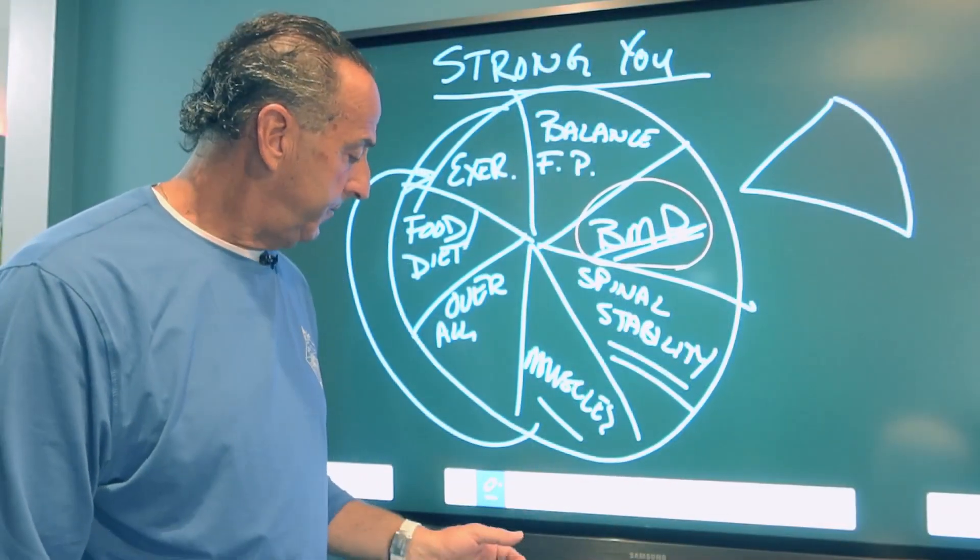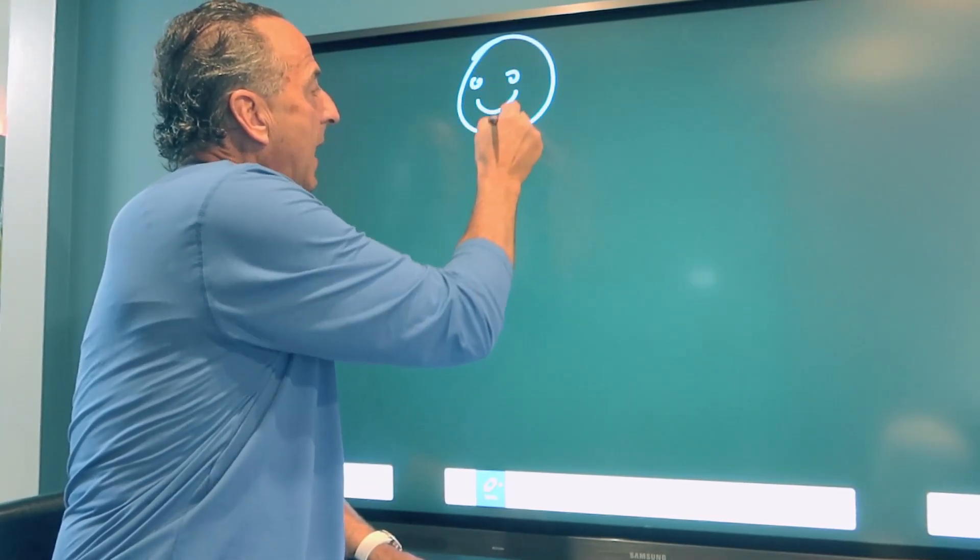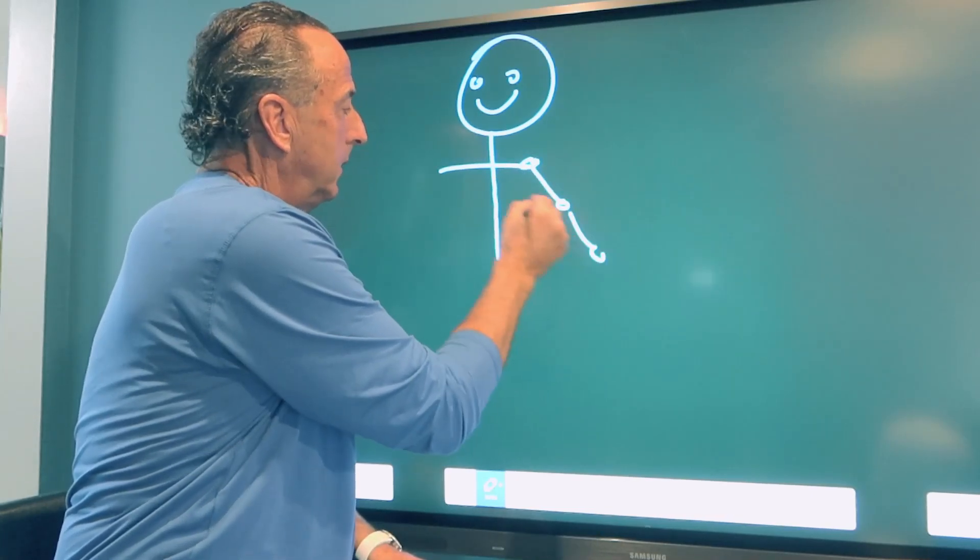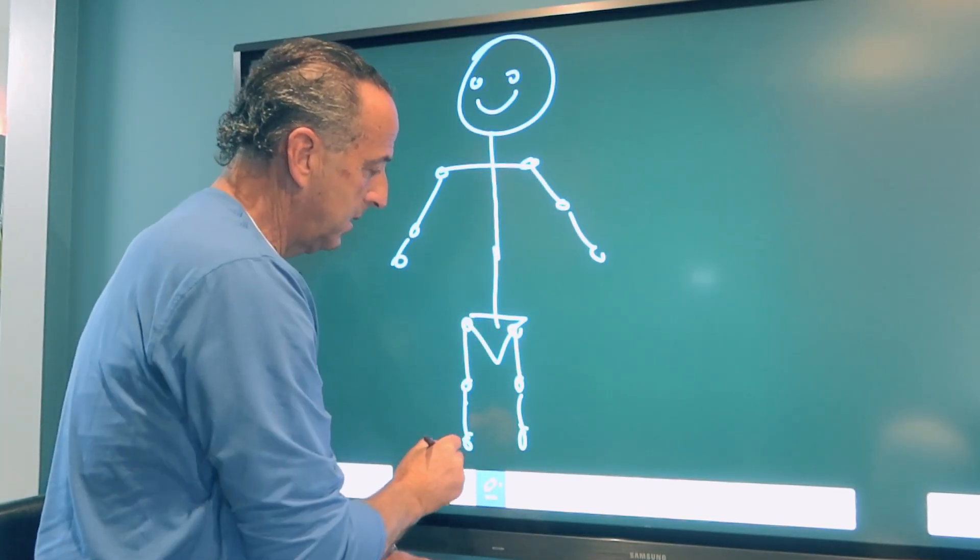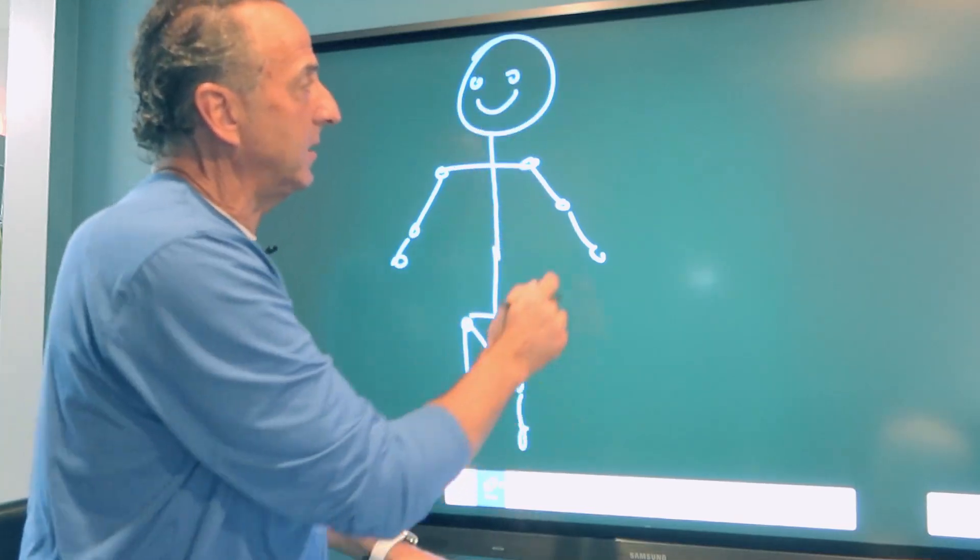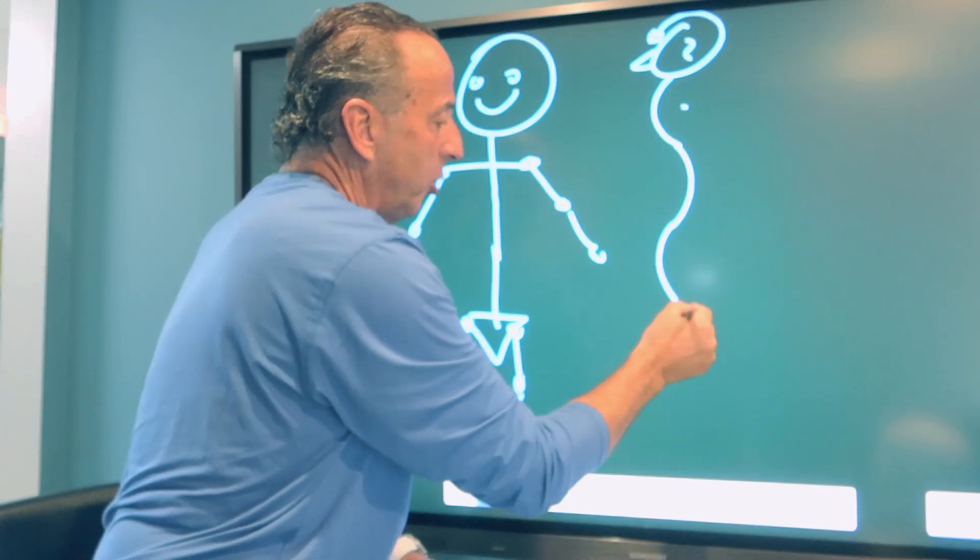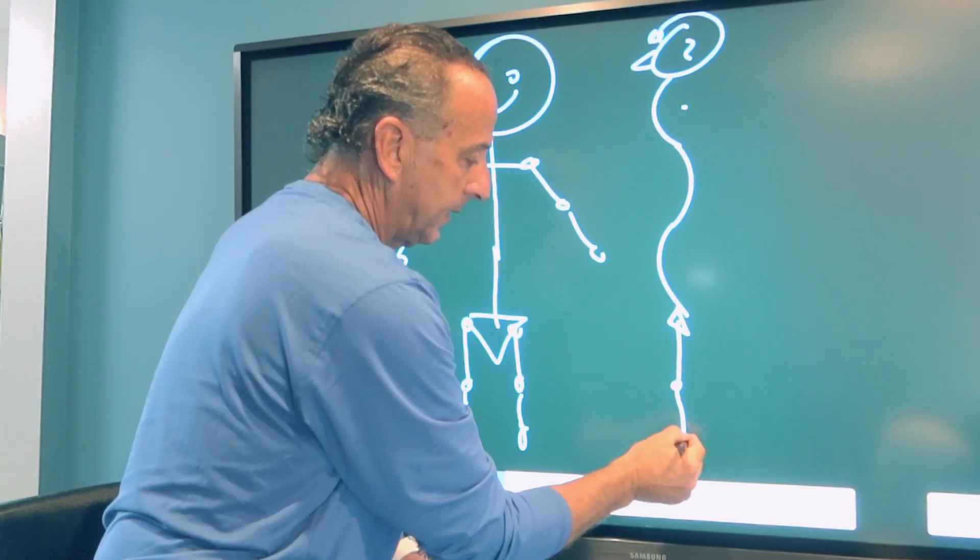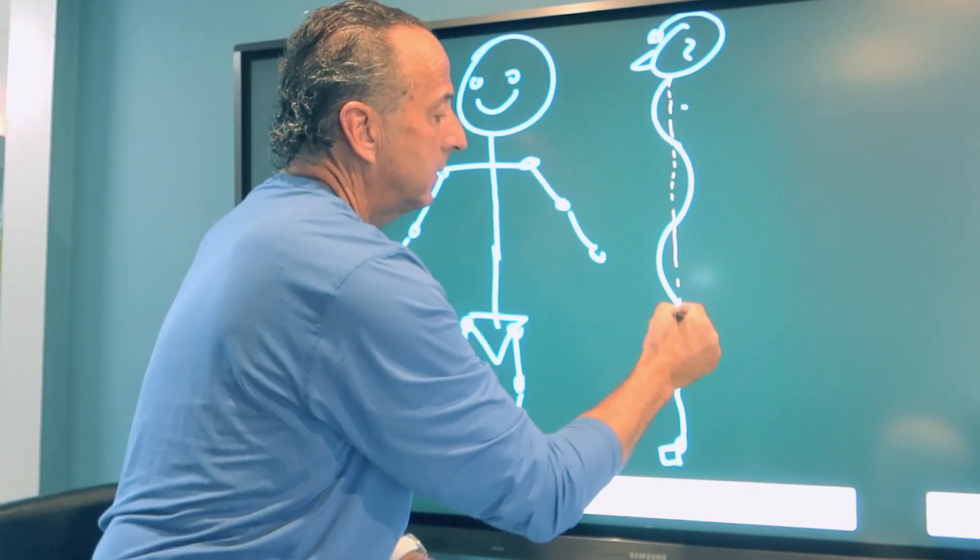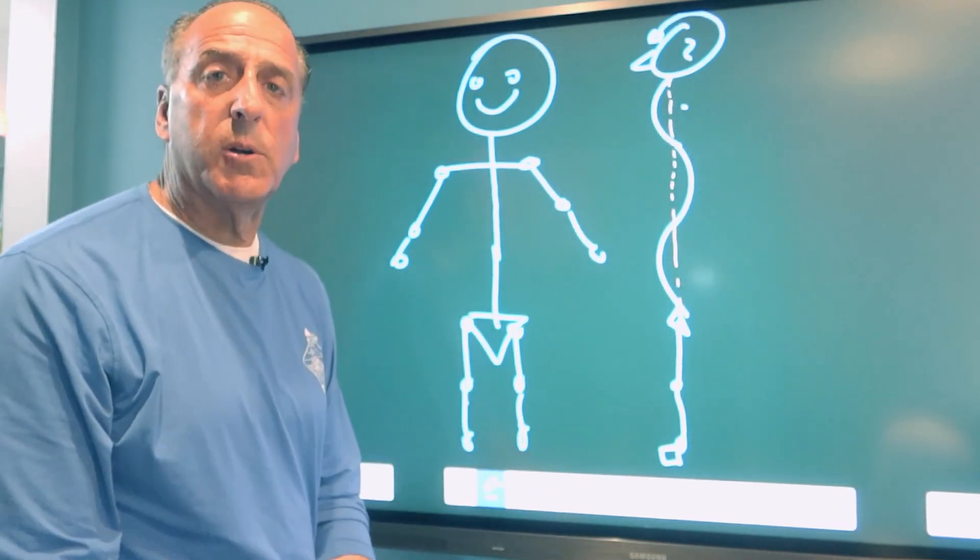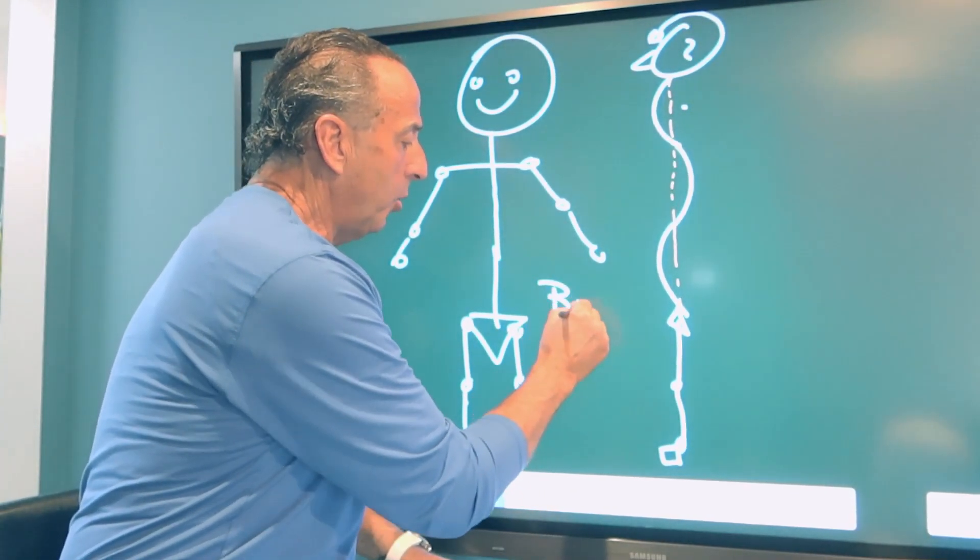So these are the pieces of the pie that we want to work on because if we want a strong you and we want to increase bone mineral density, these are the different factors. So let's break this down. I'm going to put a smiley face there, arms, pelvis. So that's us from the front. Obviously we should be nice and square. From the side view, we have the neck curve, mid back curve, low back curve, pelvis. And so it should be lined up like this.